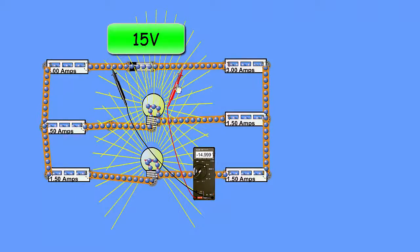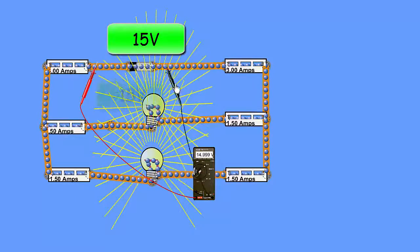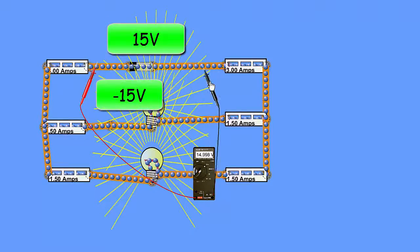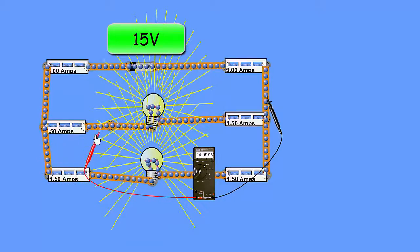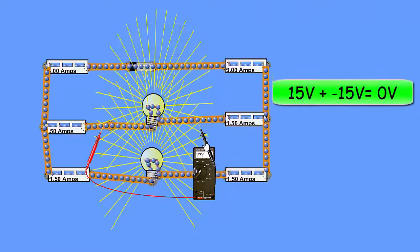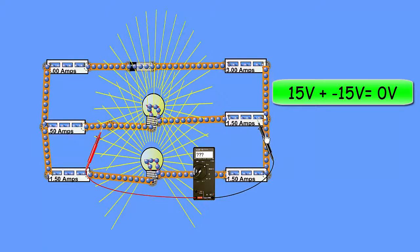Kirchhoff's voltage law still applies on the closed loops. This cell is set at 15 volts, and if you were to follow the first loop around, you'd find that the voltage added up to 0, and similarly with the second loop.